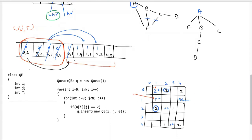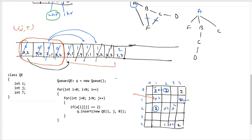Remove (2,2): it has a nearby fresh orange at (2,3), insert with time 2 and mark as rotten. Remove (4,3): nearby orange at (4,2), insert with time 2. Remove (2,3) and (4,2). The maximum time recorded across all processed elements is 2, so the answer is 2 — the entire matrix rots in 2 hours.